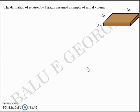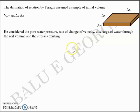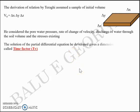For formulating the equation, Terzaghi assumed a sample of initial volume with dimensions Δx, Δy, and Δz, whose initial volume V₀ is Δx × Δy × Δz. He considered the pore water pressure, the rate of change of velocity, the discharge of water through the soil volume, and the stresses existing, and the solution of a partial differential equation.